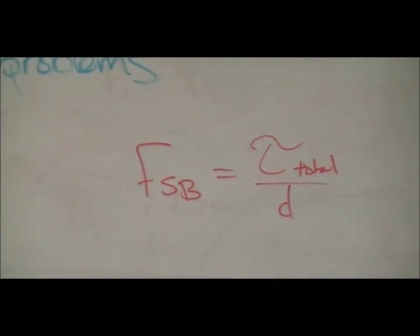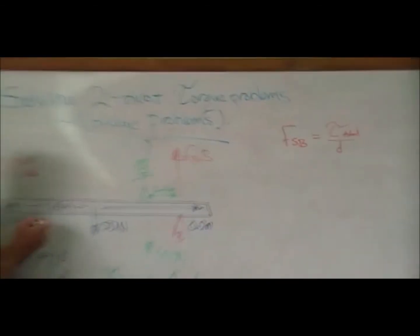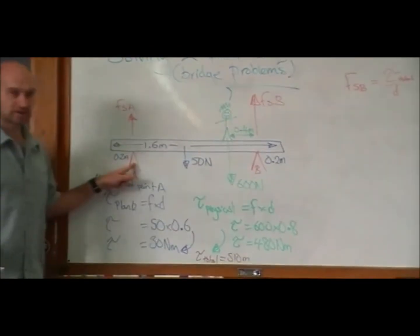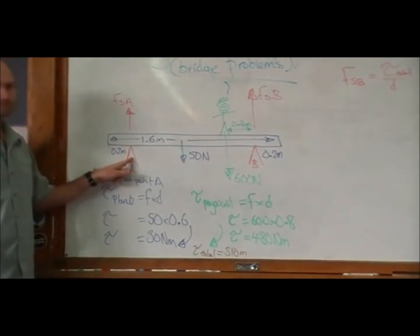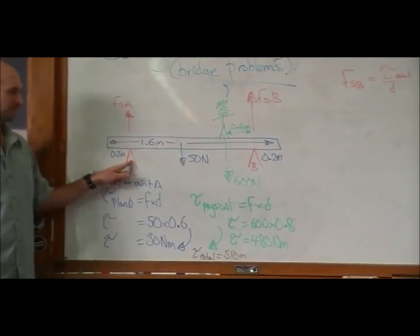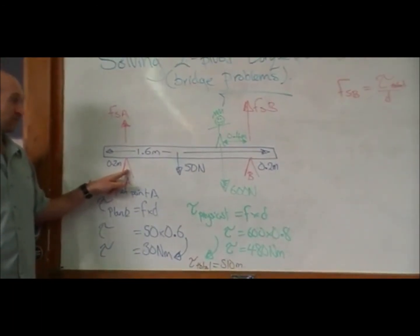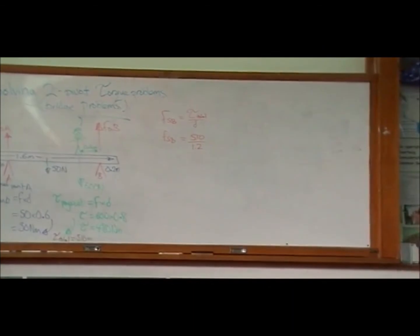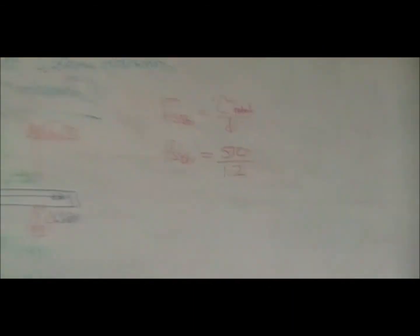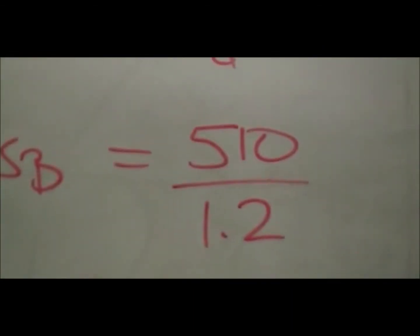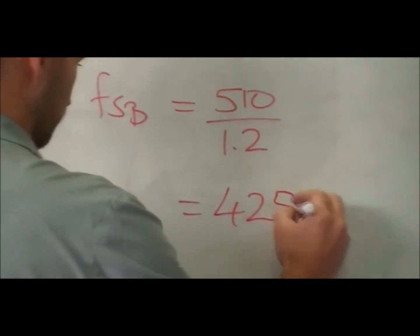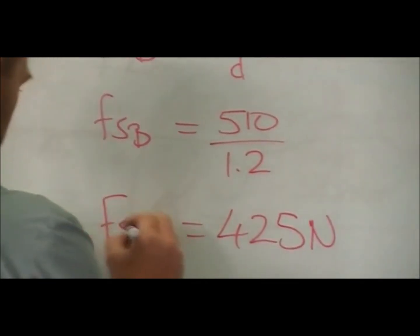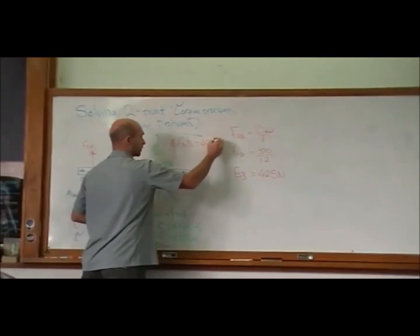And the only thing that can be pushing anti-clockwise is this pivot point B here with support force B. And so we know that support force B must be the total torque over the distance. Which distance? Well, it's the distance from this pivot point, the one that things are rotating around, to this pivot point. How far is that? 1.2. So 425 newtons. So support force B here, 425 newtons.